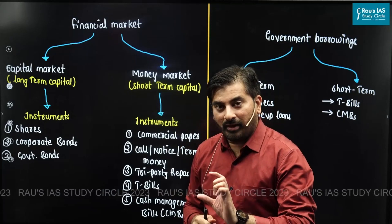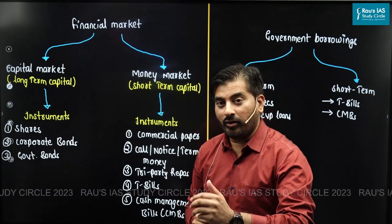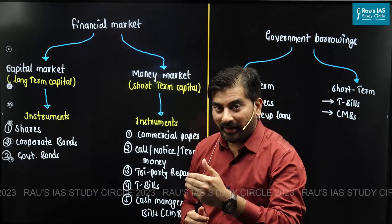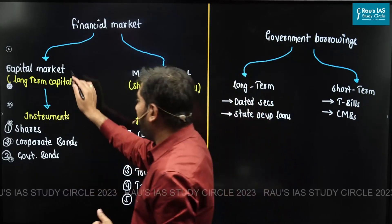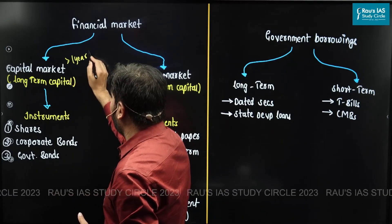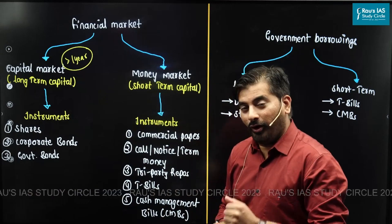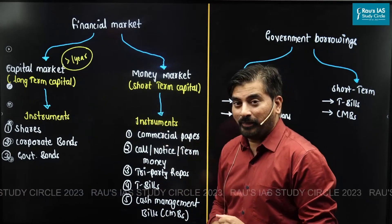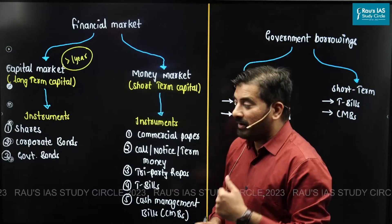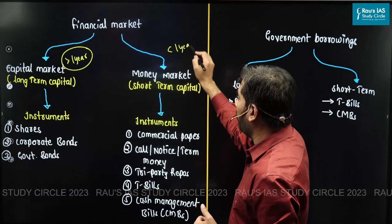Capital market is that segment of financial market which is used for raising long-term capital. When I say long-term capital, it means we are raising money for a period greater than one year. On the other hand, money market is that segment of financial market where capital is raised for a period less than one year.